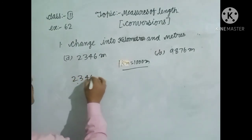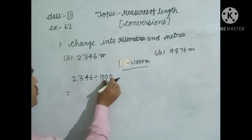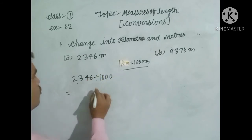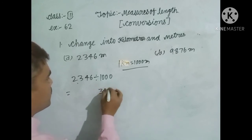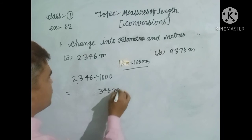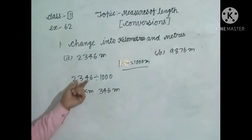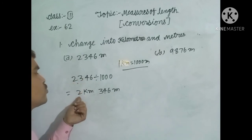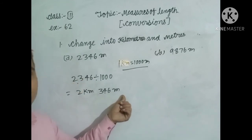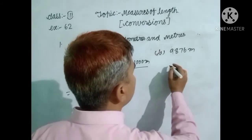Take 2346 meters divided by 1000. Dear students, using the short method, take the last three digits from the right as the remainder: 346 meters is the remainder, and 2 is the quotient. So the answer is 2 kilometers and 346 meters. That's how you find out the answer.